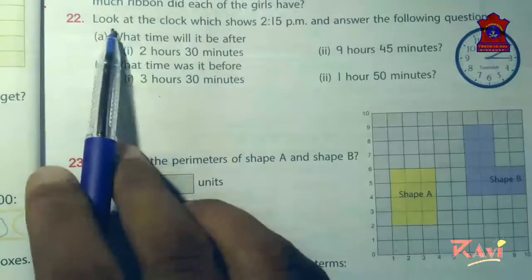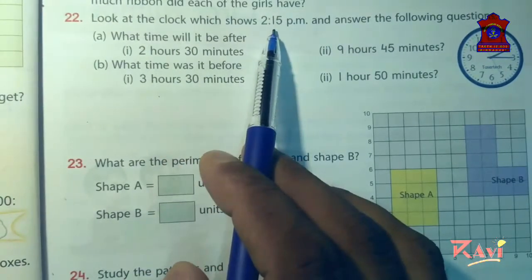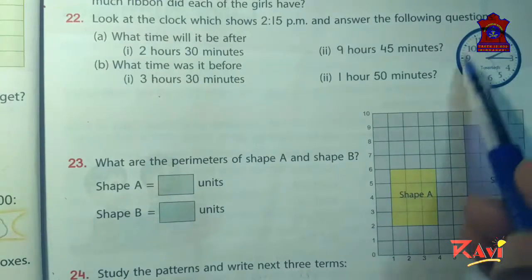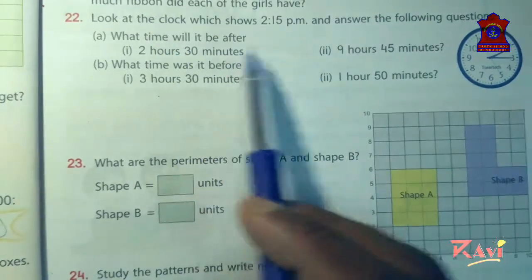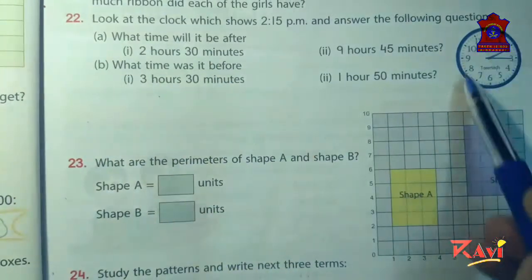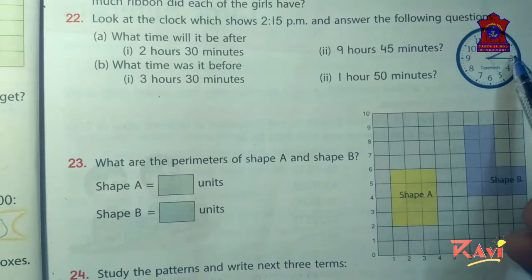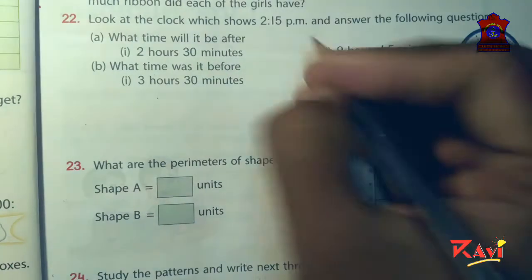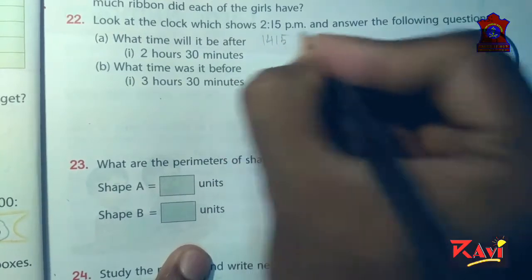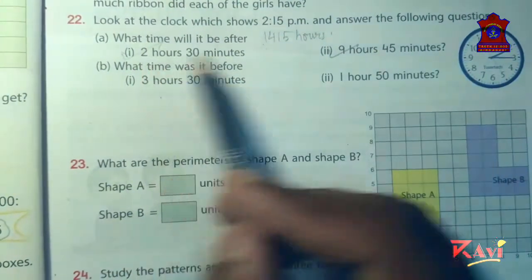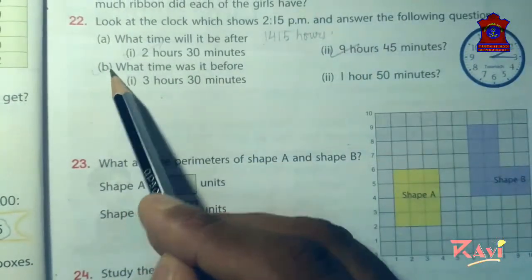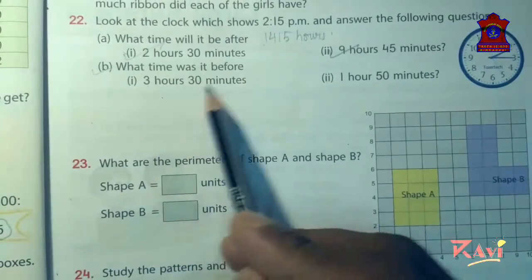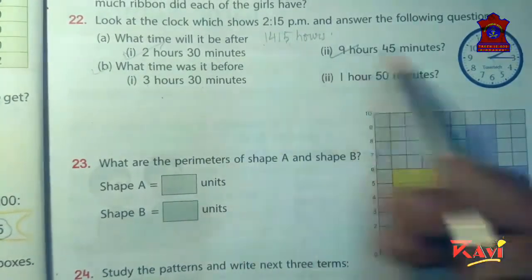Now question number 22. Look at the clock which shows 2.15 pm and answer the following questions. This clock is showing the time as 2.15 pm. What time will it be after 2 hours 30 minutes? You can convert 2.15 pm into 24 hour clock, so 2.15 will be 14.15 hours. Now you can add 2 hours 30 minutes to this to get the answer, and here 9 hours 45 minutes. Similarly in question b, you can subtract 3 hours 30 minutes and 1 hour 50 minutes from this.